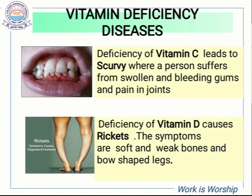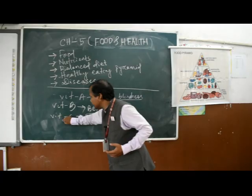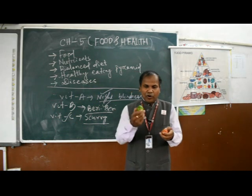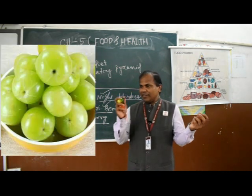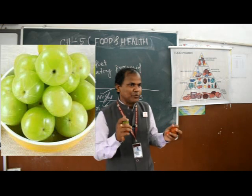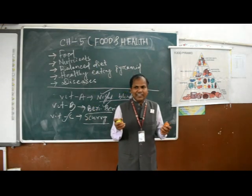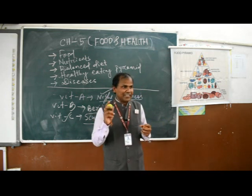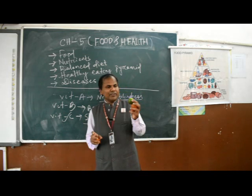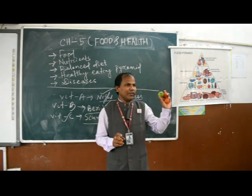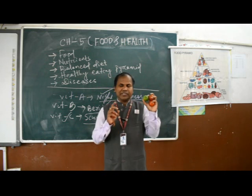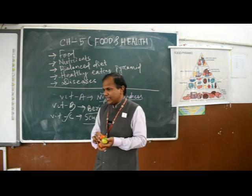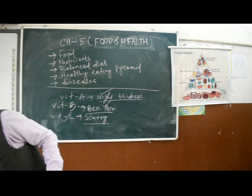To avoid scurvy or Vitamin C deficiency disease, take tomato, orange, lemon, and amla. Amla is a seasonal fruit available during winter season, but lemon and orange are available throughout the year and are very rich sources of Vitamin C. If you take these types of food, you can avoid scurvy.